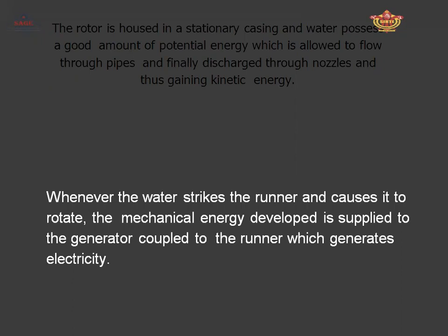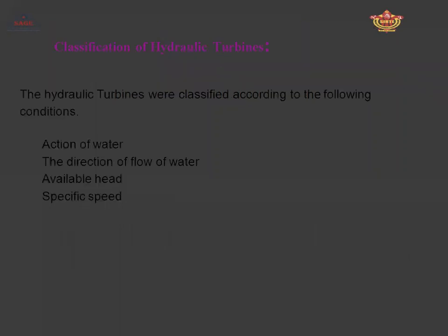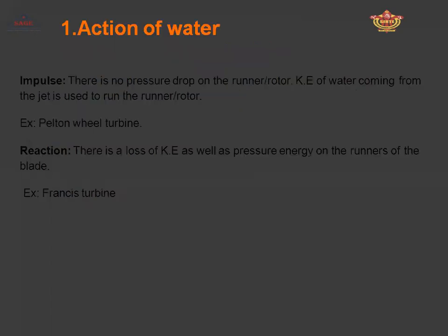The classification of the hydraulic turbine depends on the following conditions: action of the water, direction of flow of water, level of head, and specific speed. There are four parameters on which hydraulic turbines may be classified. On the basis of action of water: impulse turbines and reaction turbines. In an impulse turbine, there is no pressure drop on the runner — the kinetic energy from the water jet is used to drive the runner.